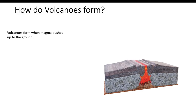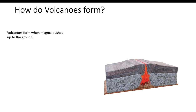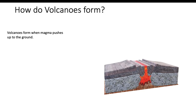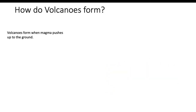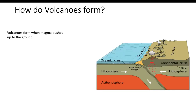Another way is a convergent boundary, which is when two plates collide with each other. When two continental plates — meaning plates with land — collide, they'll build up and form a mountain range. But when an oceanic plate and a continental plate collide with each other, the oceanic plate will sink and move into the mantle.